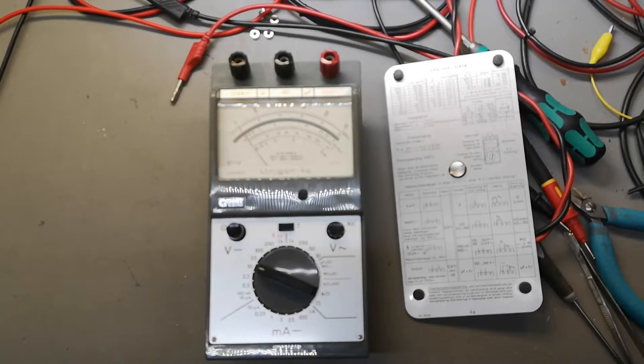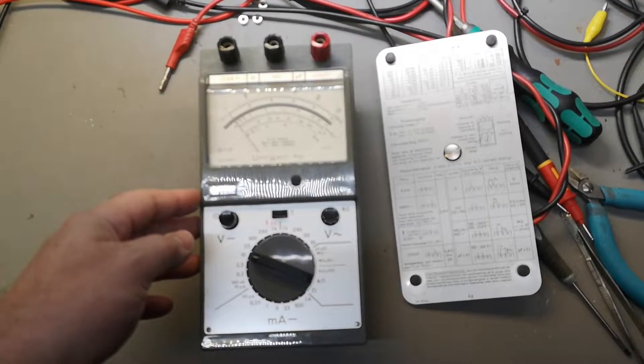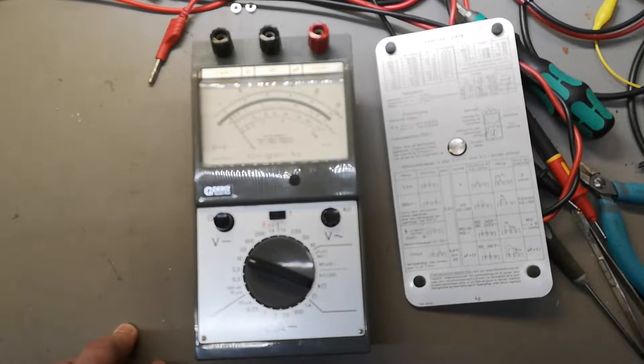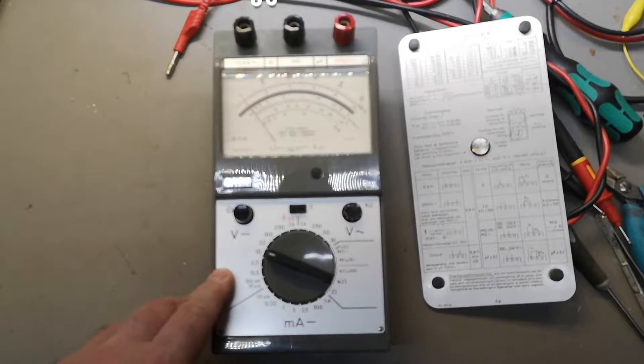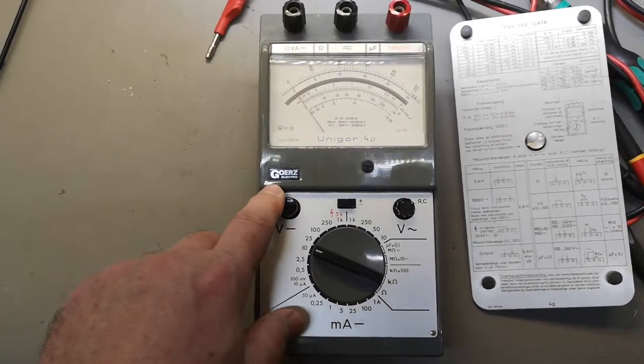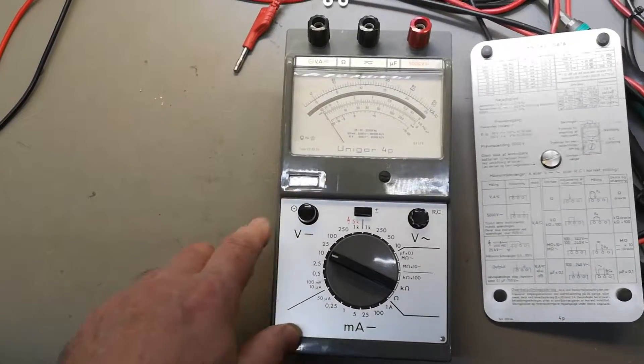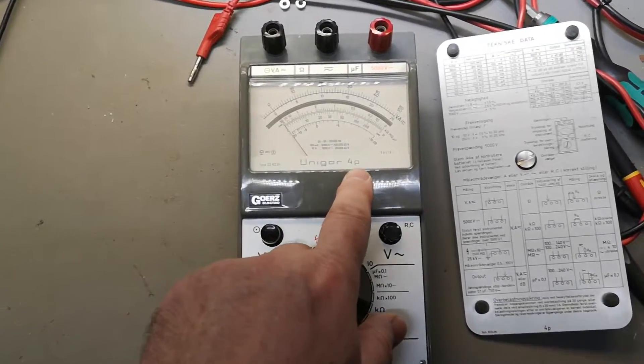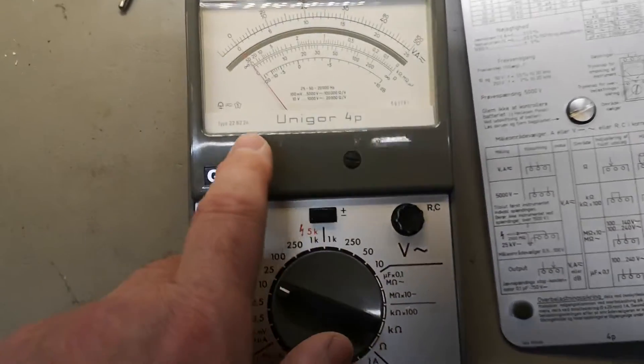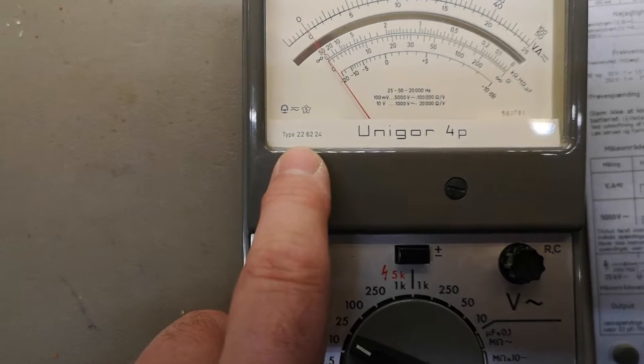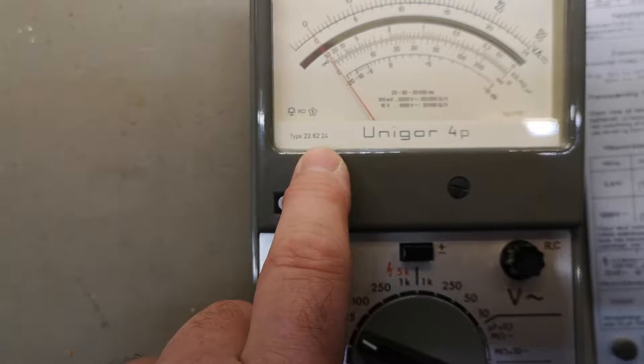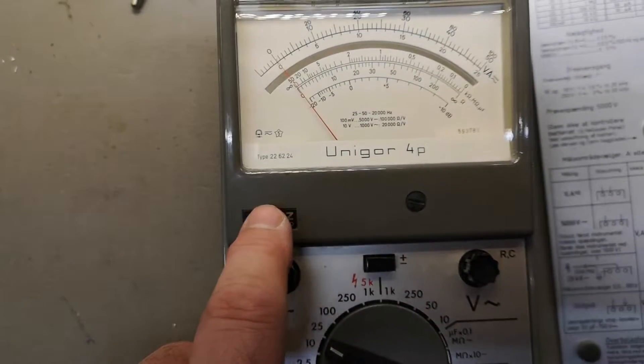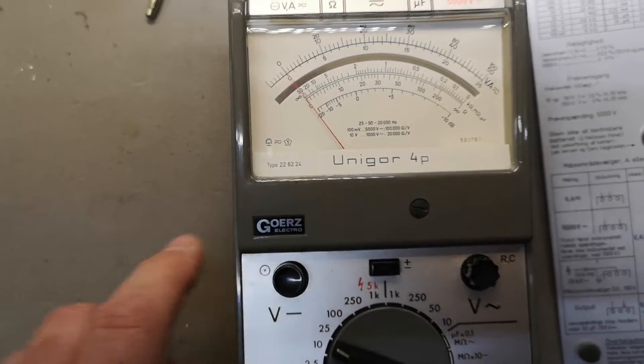Welcome to another test and teardown video. This time it's also a Goerz meter, the Unicorn 4P, and the type number here is 22 64 24, so it is a different model.